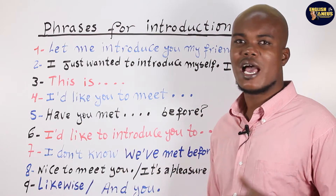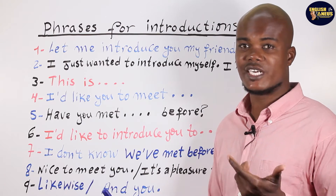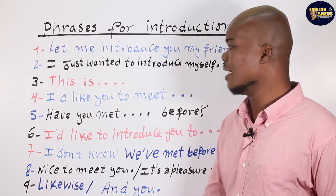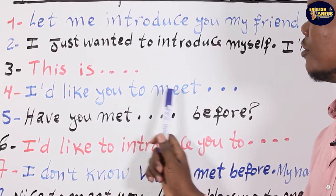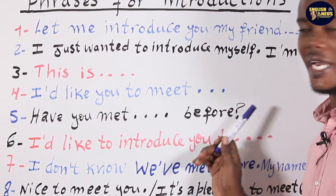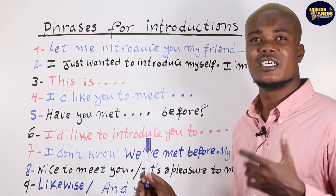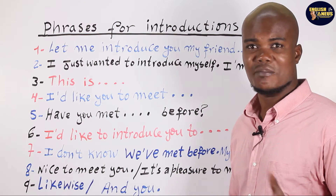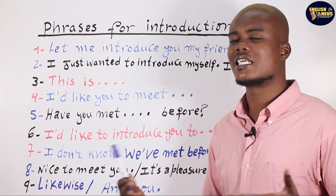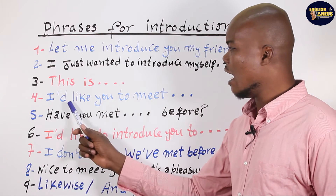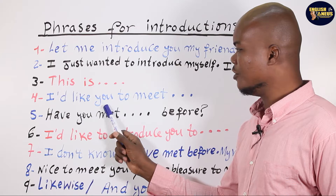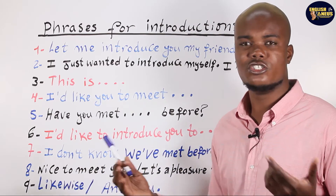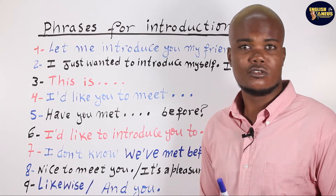Or another way you can say that is: 'I'd like you to meet.' For example: 'I'd like you to meet Jude.' That means 'I'd like you to meet that person.' It's the same process but using different phrases. So: 'I'd like you to meet Telmon.' 'I'd like you to meet Jude.' 'I'd like you to meet Pedro.'